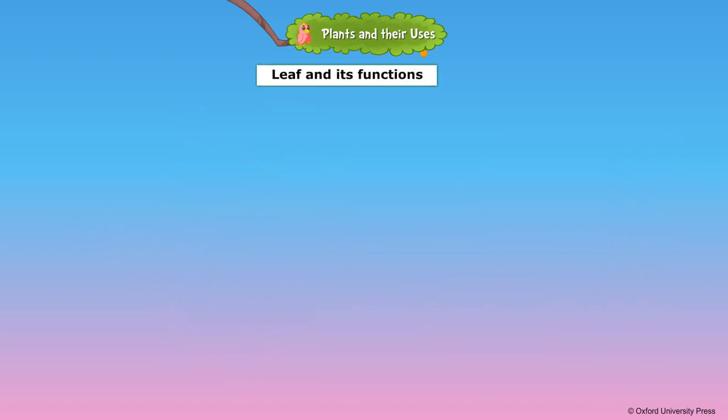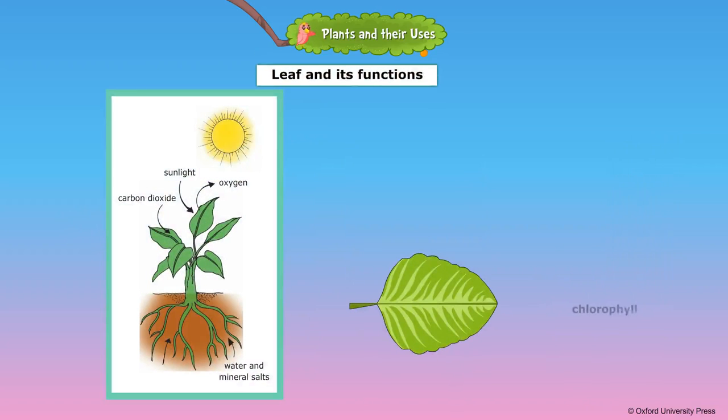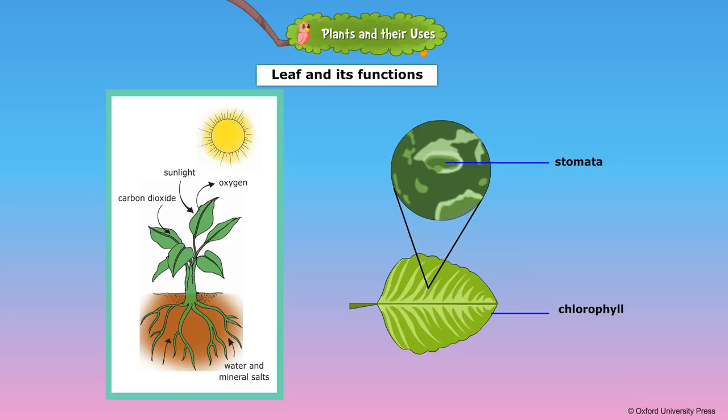Leaves are the green parts of a plant. A green substance called chlorophyll, found in the green leaves, uses sunlight and prepares food for the plant. The plants breathe through the tiny pores called stomata, present in the leaves.